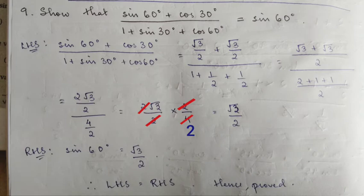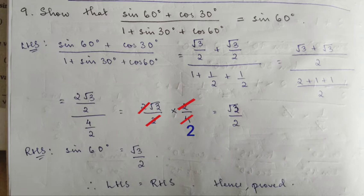In this same way, you can do question number 10. Number 10: LHS is 1 minus cos30 by sin30. Substitute the values. Right hand side: 1 minus cos60 by 1 plus cos60. Substitute cos60. LHS equals RHS. Therefore LHS is equal to RHS, hence proved.